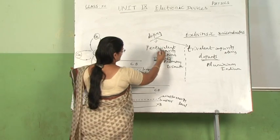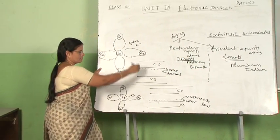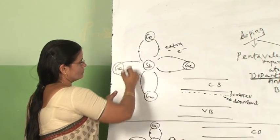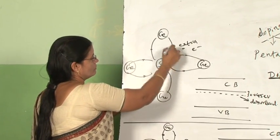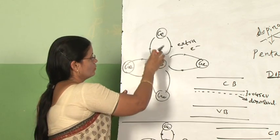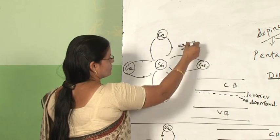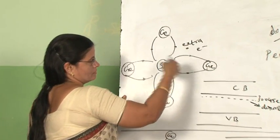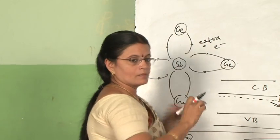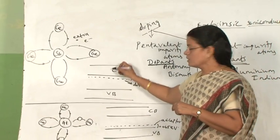We will now see how the addition of pentavalent and trivalent impurity atoms modifies the energy level diagram. Taking antimony as an example: the 4 valence electrons of antimony form 4 covalent bonds with neighbouring germanium atoms, since the dopant atom replaces the original germanium atom. The 5th electron is left free in the crystal, and these extra donated electrons occupy an energy level very close to the conduction band.